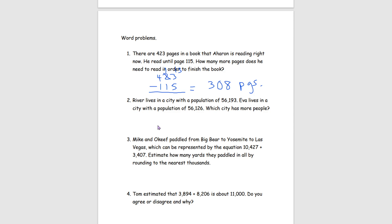For number 2: River lives in a city with a population of 56,193 and Eva lives in a city with a population of 56,126. Which city has more people? Comparing the numbers digit by digit: 5 and 5, 6 and 6, 1 and 1 — all the same. Then we get to 9 and 2. Since 9 is greater than 2, River lives in the city with more people.